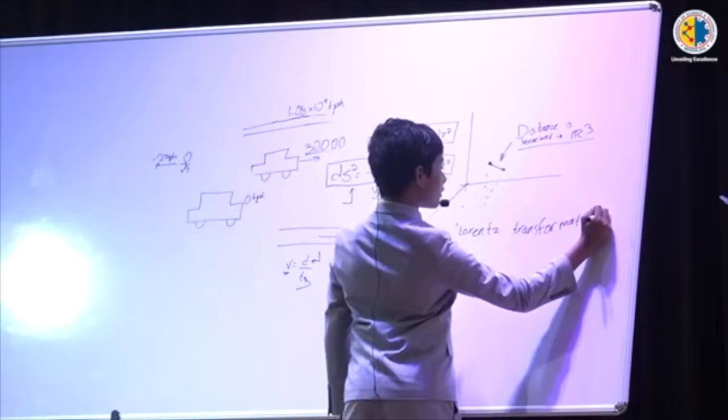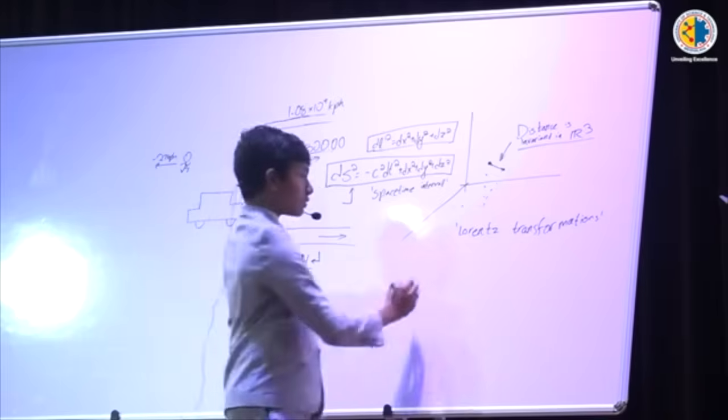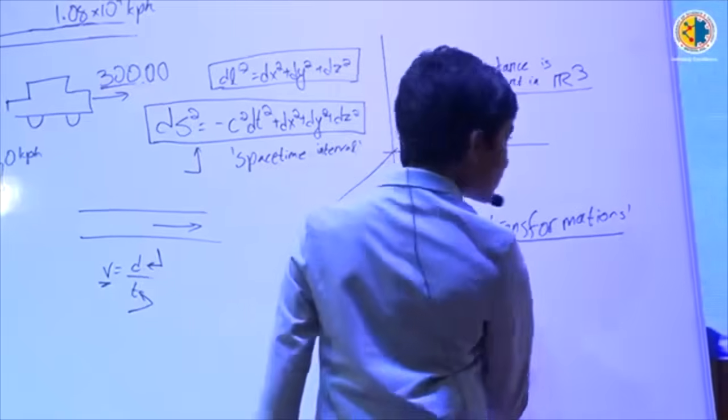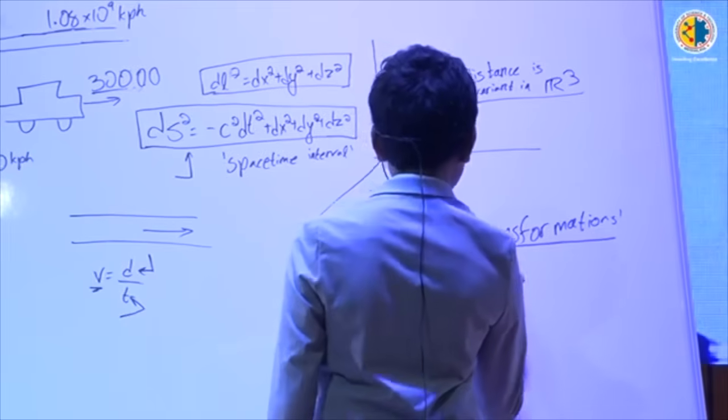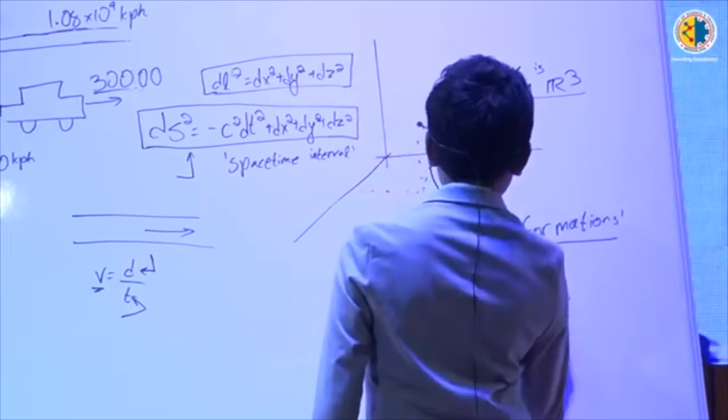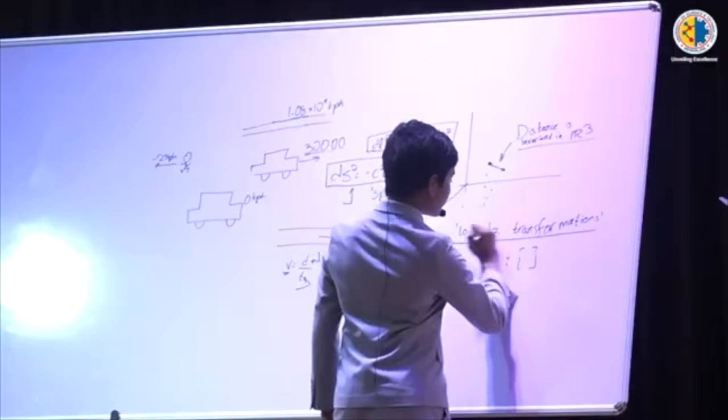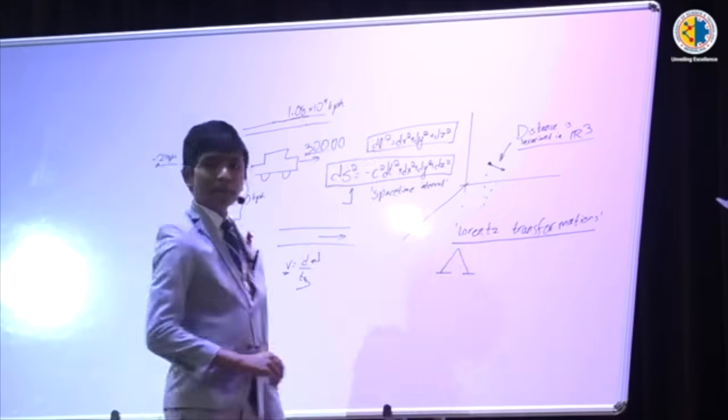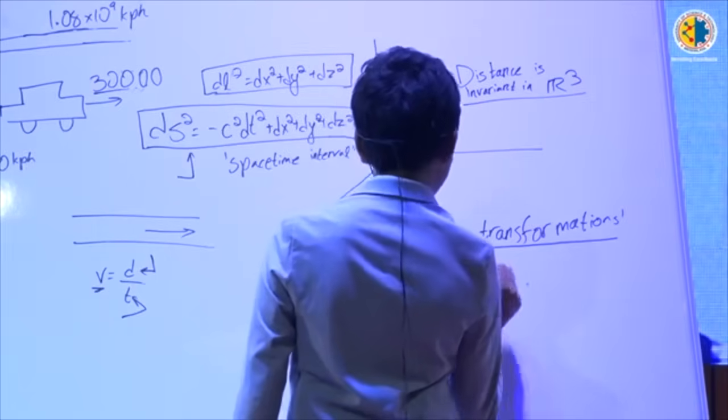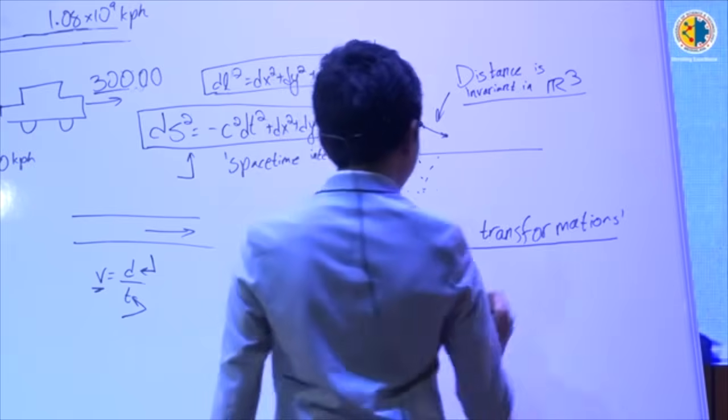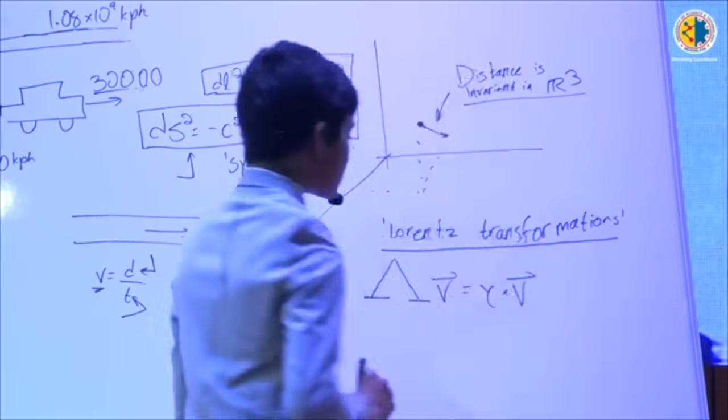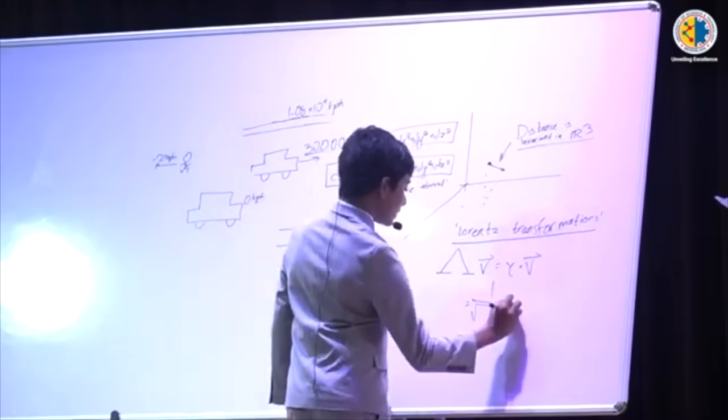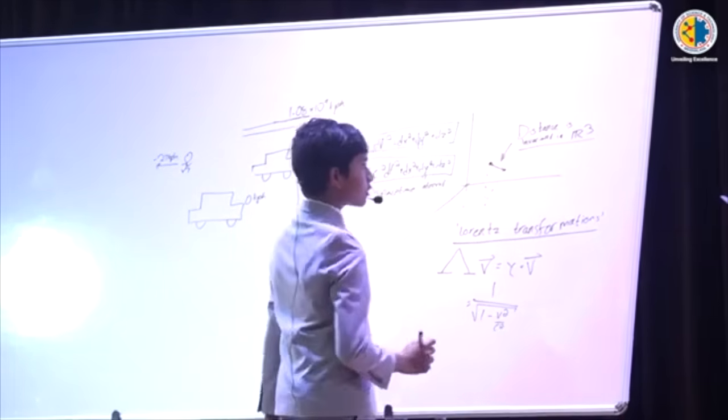And long story short, you can essentially calculate what these Lorentz transformations are, their general form, and what it will give you is a proportionality constant, gamma, times whatever vector you originally had. Well, let me write this in a better way. The Lorentz transform is often written as a capital lambda. So, what will happen is, you'll often have capital lambda times any vector you have is going to be equal to the same exact vector times a certain constant called gamma. And, this constant, which you can calculate, is specifically equal to 1 over square root of 1 minus v squared over c squared.